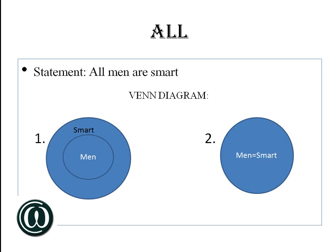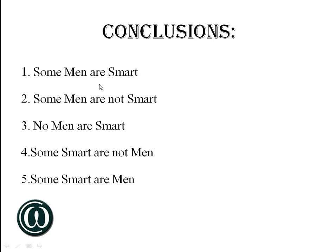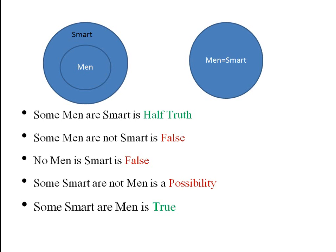For example, the five types are: some men are smart, some men are not smart, no men are smart, some men are not smart, and some smart men. So if all men are smart, you can tell me some men are smart or some men are not smart. Let's bifurcate these conclusion types and understand what is a possibility.